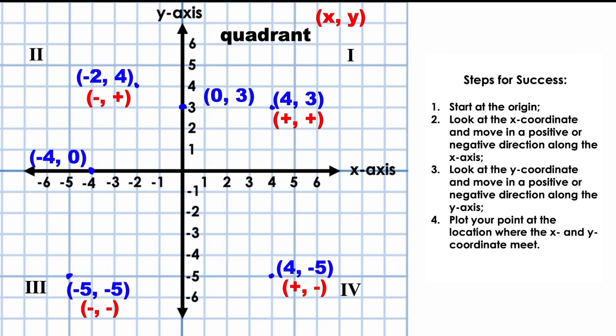As we can see, any point on the coordinate plane will lie in one of the four quadrants, on the x-axis, on the y-axis, or right at the origin.